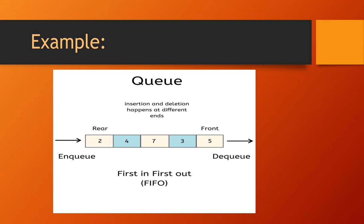As it follows first in first out mechanism, here 5 is the first element to insert into the queue and it is the first element to remove from the queue. The size of the queue is 5. The index value of 5 is 0, index value of 3 is 1, index value of 7 is 2, index value of 4 is 3, and index value of 2 is 4. According to the index values, the elements are removed from the queue.